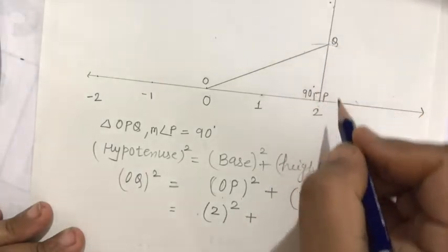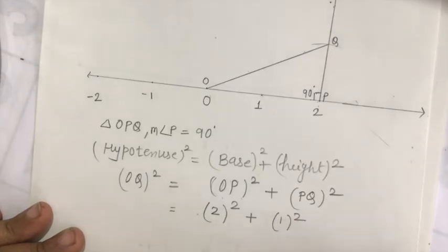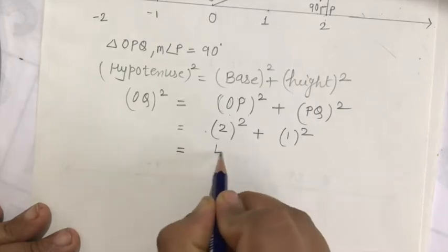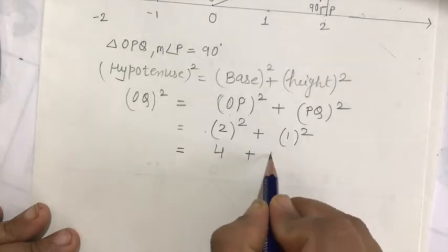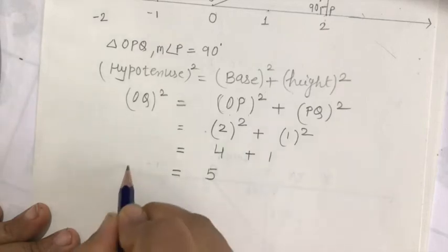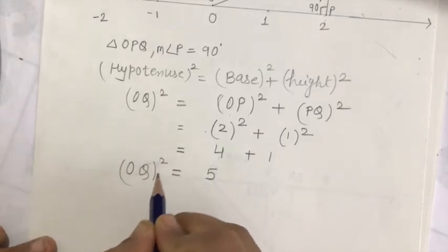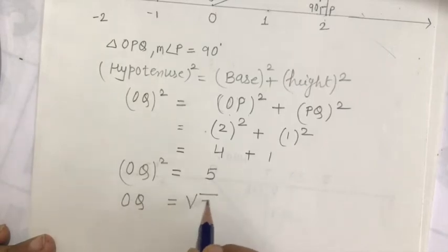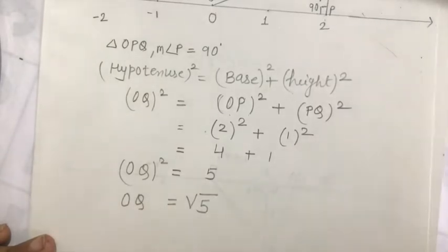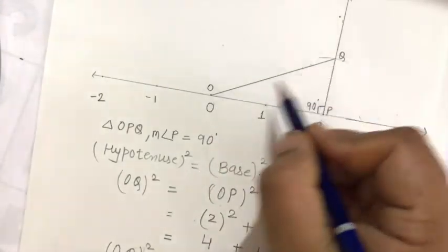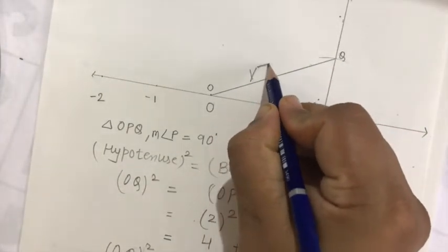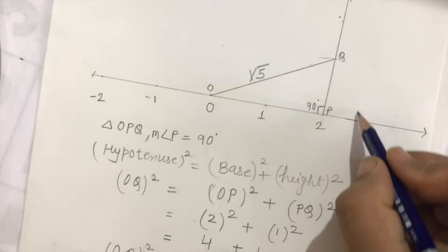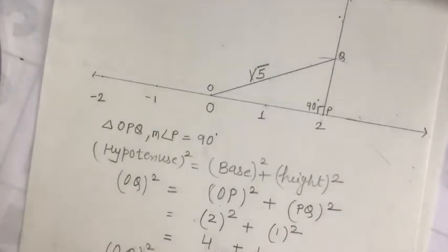PQ distance is 1 unit, that is 1 squared. You know that 2 squared is 4 and 1 squared is 1, so 4 plus 1 is 5. So we are getting OQ squared equals 5, and taking the square root we get OQ equals root 5. Therefore the distance OQ is root 5.